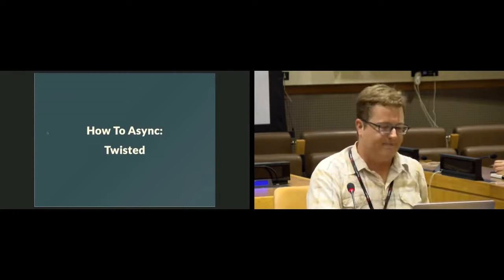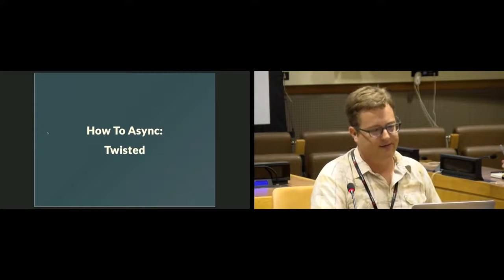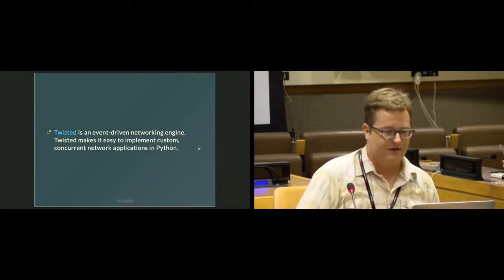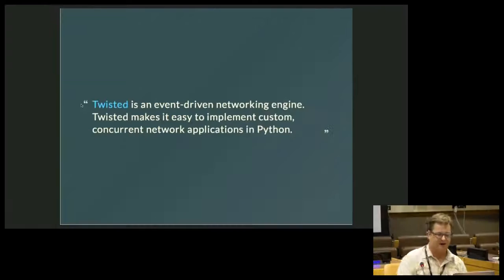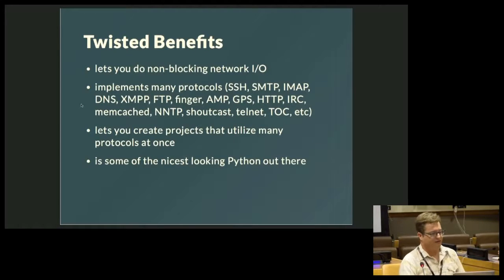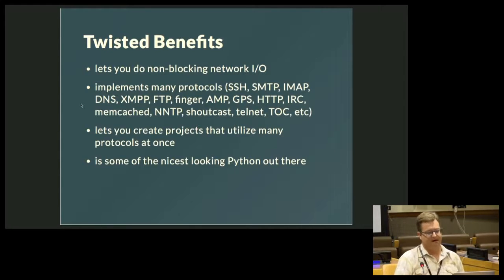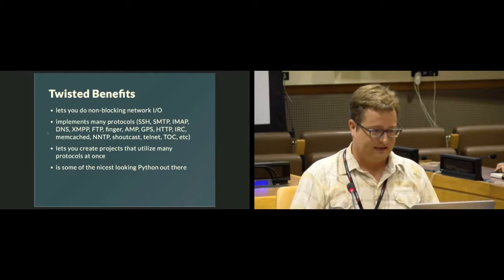So let's talk about how to async. I think one of the best examples in Python, historically, has been Twisted. Twisted is an event-driven networking engine — it makes it easy to implement custom concurrent network applications in Python. It lets you do lots of cool stuff: non-blocking network I.O., and it implements many protocols including SSH, SMTP, IMAP, DNS, XMPP, FTP, FINGER, AMP, GPS, HTTP, IRC, Memcache, NTP, Telnet, and TOC.